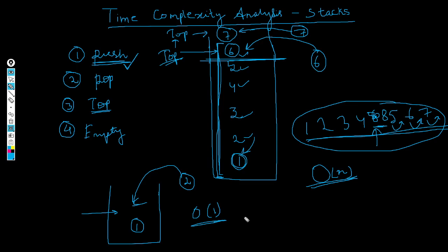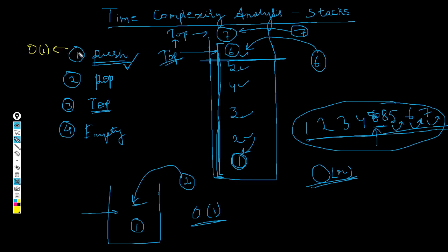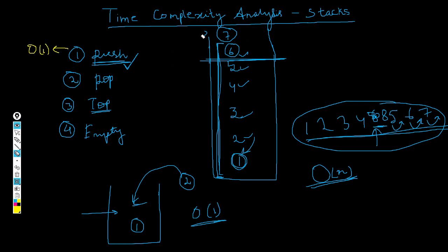So the time complexity for the push operation — inserting a new element — is O(1). Now let's move to the pop operation. Imagine we want to pop the element seven off the stack. Again, this will just be a single operation — simply deleting that particular element from the top.